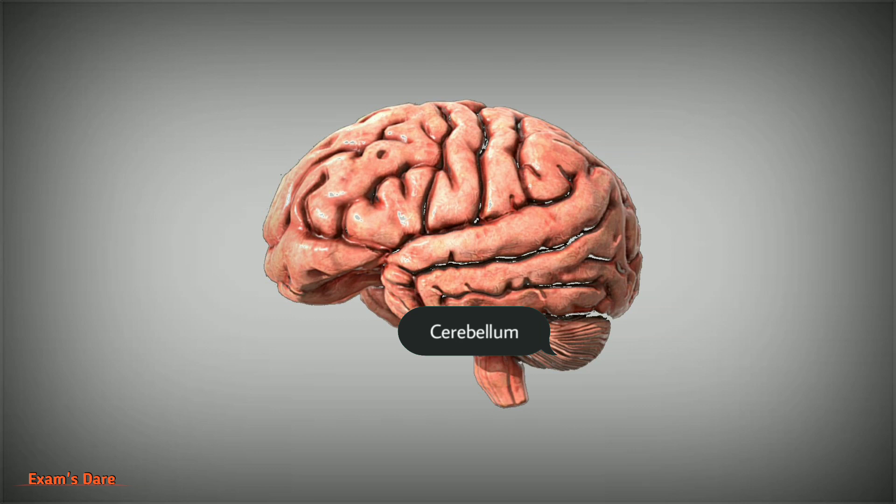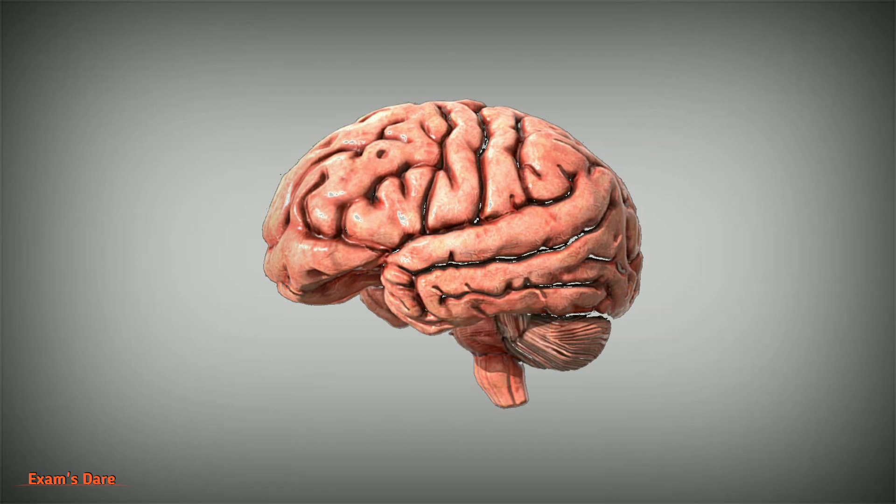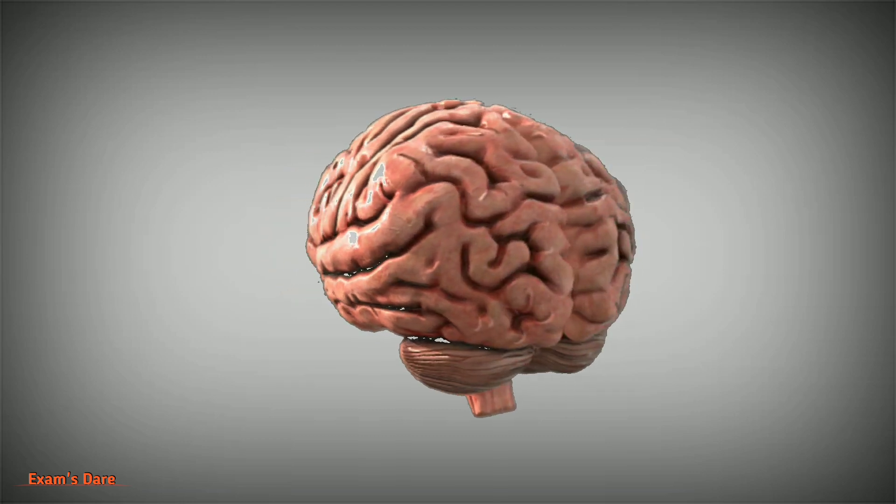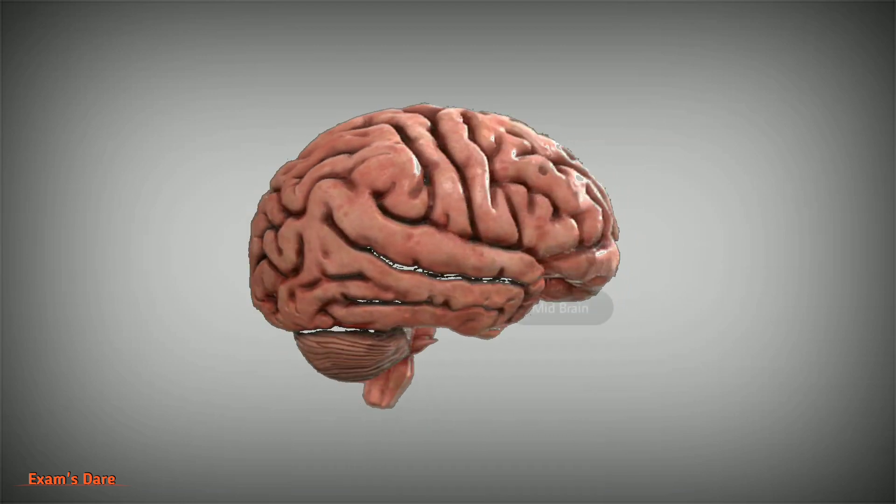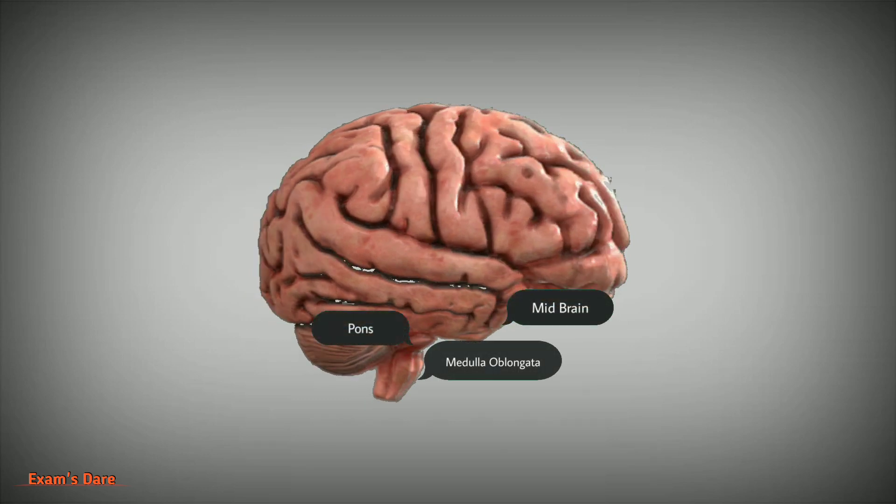Now brain stem. It consists of midbrain, pons, and medulla oblongata. Midbrain is located below the cerebral cortex. It is the connection between brain and spinal cord. It is responsible for reflex movement of the body and hearing reflexes. Pons connects the cerebellum to the rest of the brain. It is located above the medulla oblongata and below midbrain.